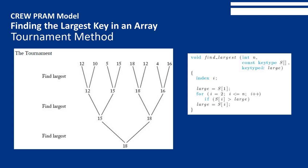The tournament method pairs numbers into groups of two and finds the largest winner of each pair, then pairs the winners and finds the largest of those pairs, continuing until only one key remains. This method can benefit from using more processors, unlike the serial approach that requires the result of each iteration for the next. A sequential algorithm for the tournament method has the same time complexity.